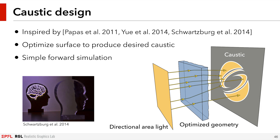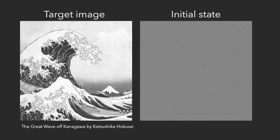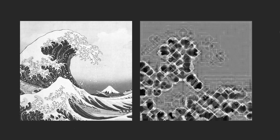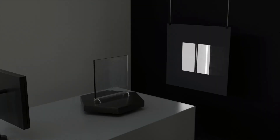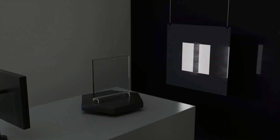The problem of caustic design has been addressed in several previous papers. Previous solutions used for example optimal transport theory or decomposition of the caustic into Gaussian kernels. While these approaches work well, the math they use is fairly complex and hard to extend. Using Mitsuba 2, we only need to implement a simple forward rendering method to render caustics. We can then optimize the surface using our autodiff backend and performing gradient descent. In this example, we optimize our geometry to produce a caustic reproducing a target image. The optimization starts at a coarse resolution and then gradually refines the image until we get a very good match.